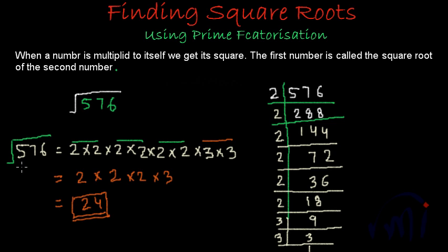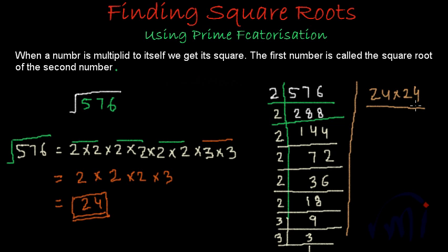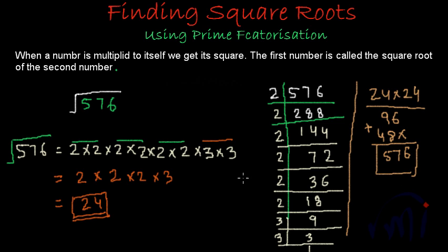Let's cross-check: if 24 is the square root of 576, then 24 multiplied by 24 should give 576. Computing 24 × 24: 4 × 4 = 16, carry 1; 4 × 2 = 8 plus 1 = 9; 2 × 4 = 8; 2 × 2 = 4. Adding up gives 576. So 24 is confirmed as the square root of 576.